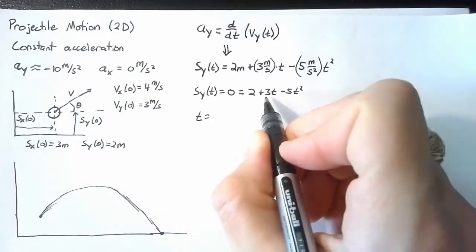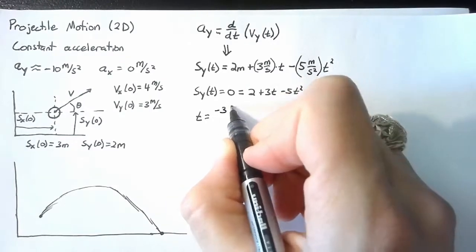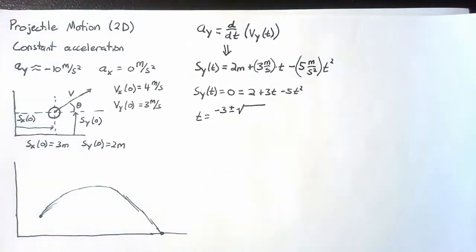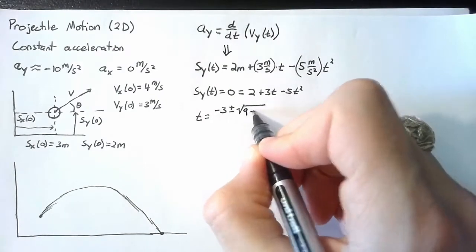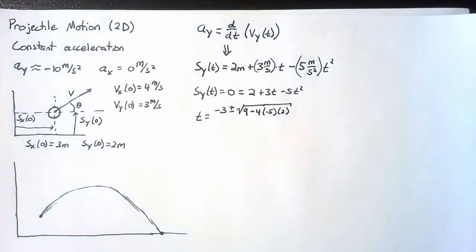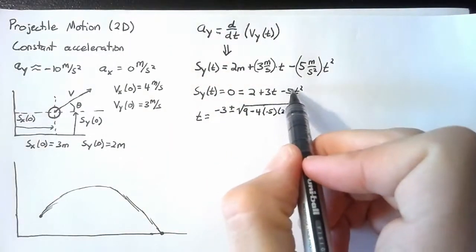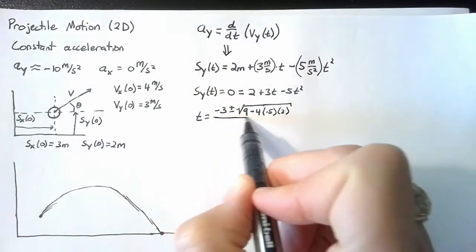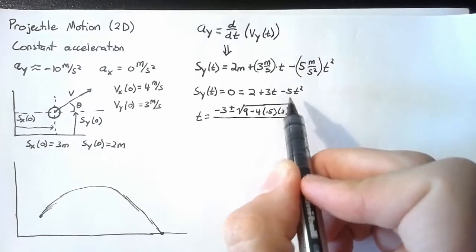So t is equal to negative b plus or minus the square root of b squared minus 4ac. I wrote this backwards so this is our a, this is our b, this is our c, all divided by 2a.